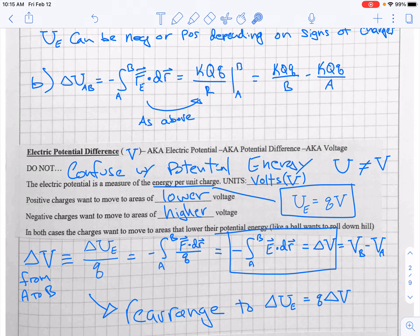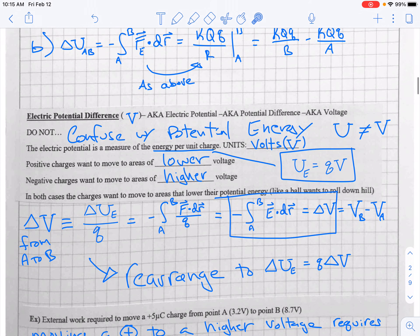So if you take voltage and multiply it by a charge, you get energy. You could also divide this and get voltage as U over Q. The change in voltage from A to B is the change in electric energy divided by charge. Energy per unit charge.